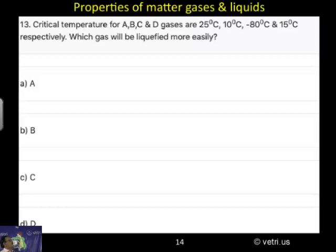Critical temperature for A, B, C, and D gases are 25, 10, minus 8, and 15 degrees respectively. Which gas will be liquefied more easily?